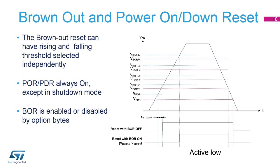The power resets BOR and POR reset all registers, except those in backup domain powered by VBAT, which contains the RTC and TAMP blocks and the external low-speed oscillator LSE. When exiting standby mode, all registers powered by the main regulator are reset. When exiting shutdown mode, a power reset is generated.